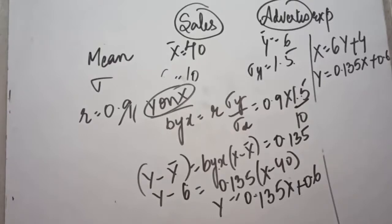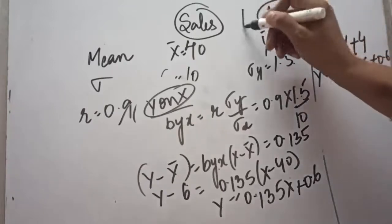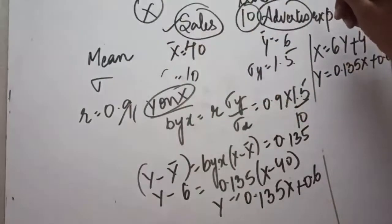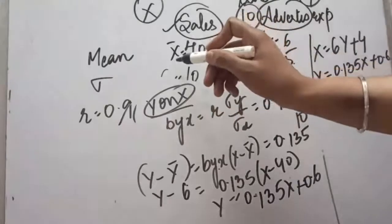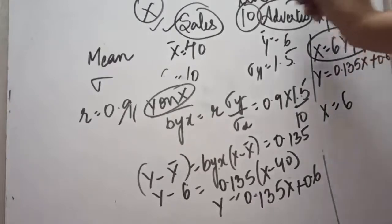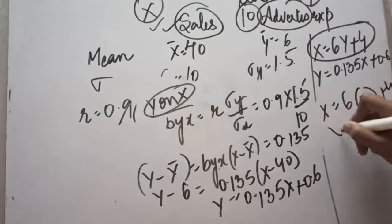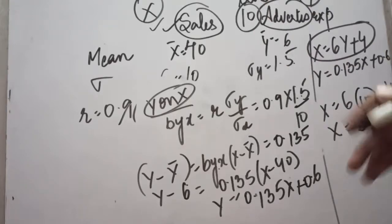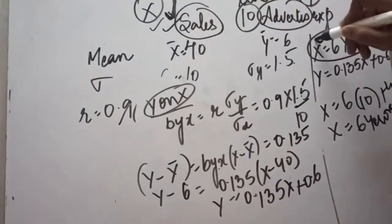Another part of the question asks us to find the sales for a proposed advertising expenditure of 10 crore. We assumed sales to be x and advertising expenditure to be y. So, advertisement expenditure y = 10 crore and sales x has to be calculated. Since x has to be found, we use the x on y equation: x = 6 × 10 + 4 = 64 crores. Whatever variable has to be calculated, we fill values into its corresponding regression equation.